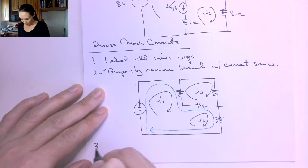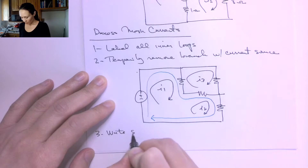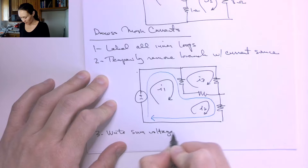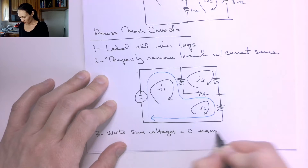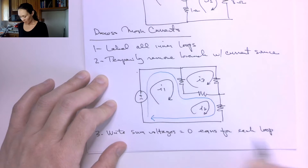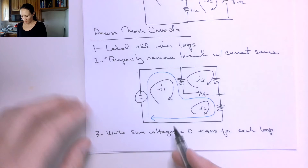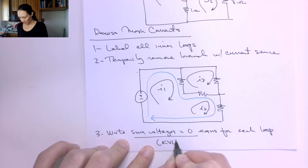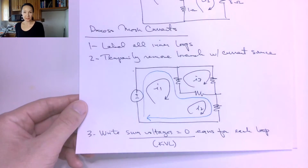Step number three: we're going to write our sum of voltages equals zero equations for each loop, combining loops I1 and I2. This sum-of-voltages equation is what KVL tells us we can do — around any loop, if we add up all the voltage drops, we're going to get zero.